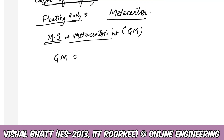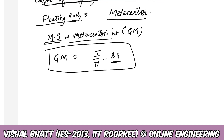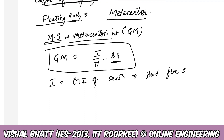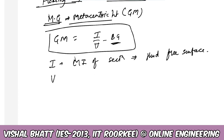The formula for GM is given as I divided by volume minus BG, where BG is the distance between the center of buoyancy and center of gravity, I is the moment of inertia of the section intercepted by the fluid free surface, and V is the volume of fluid displaced by the body.